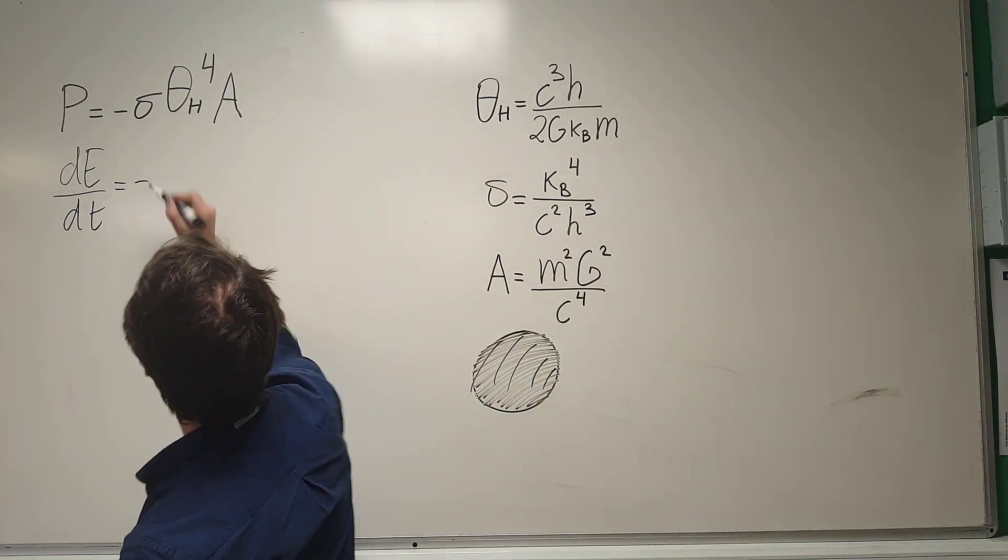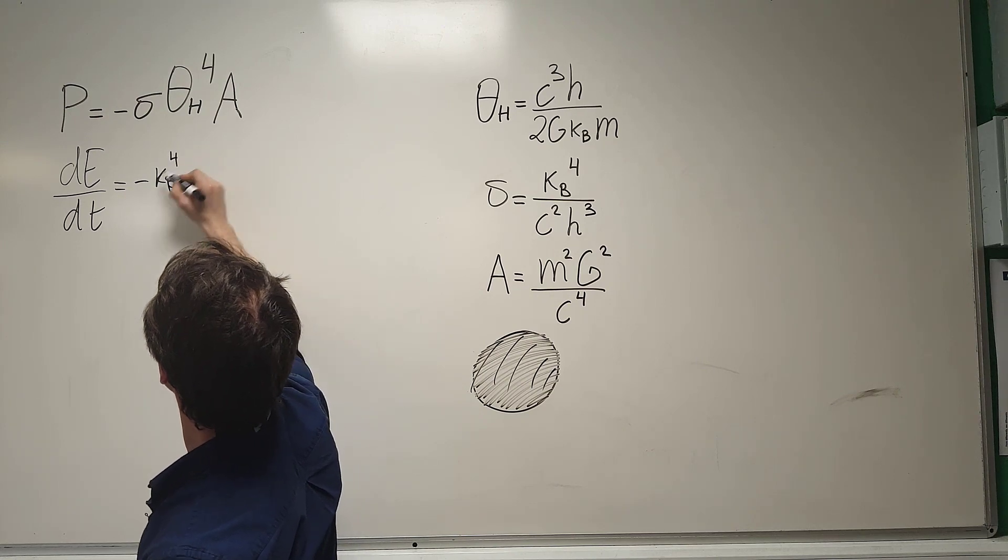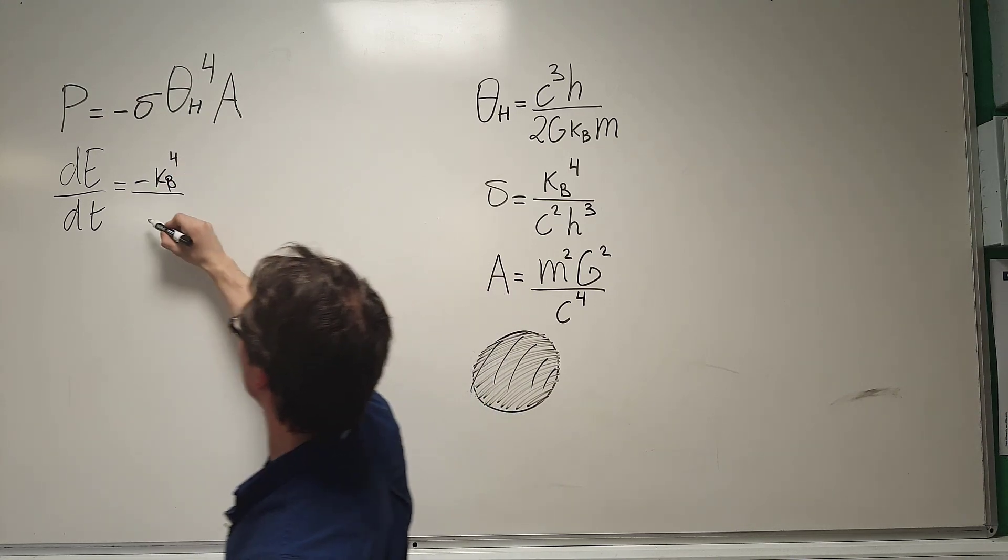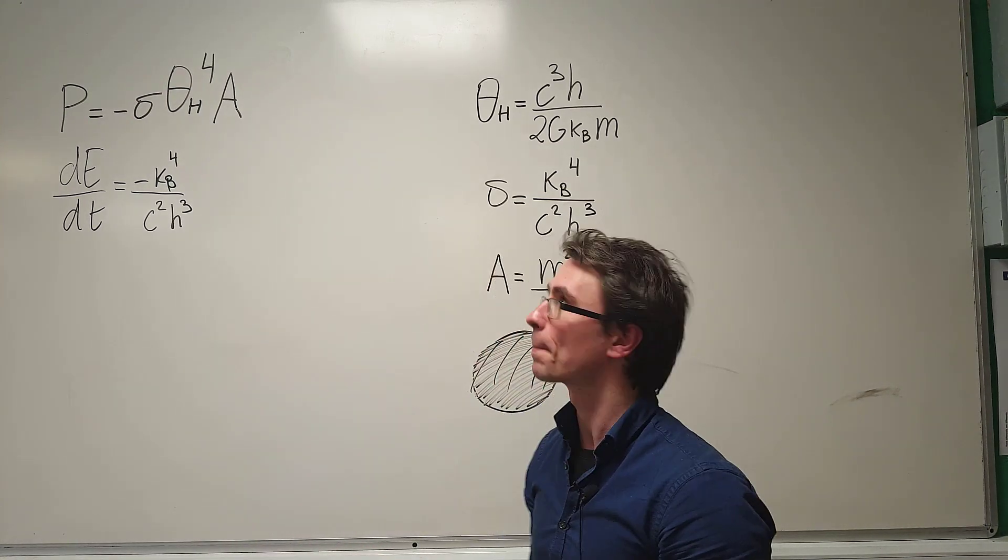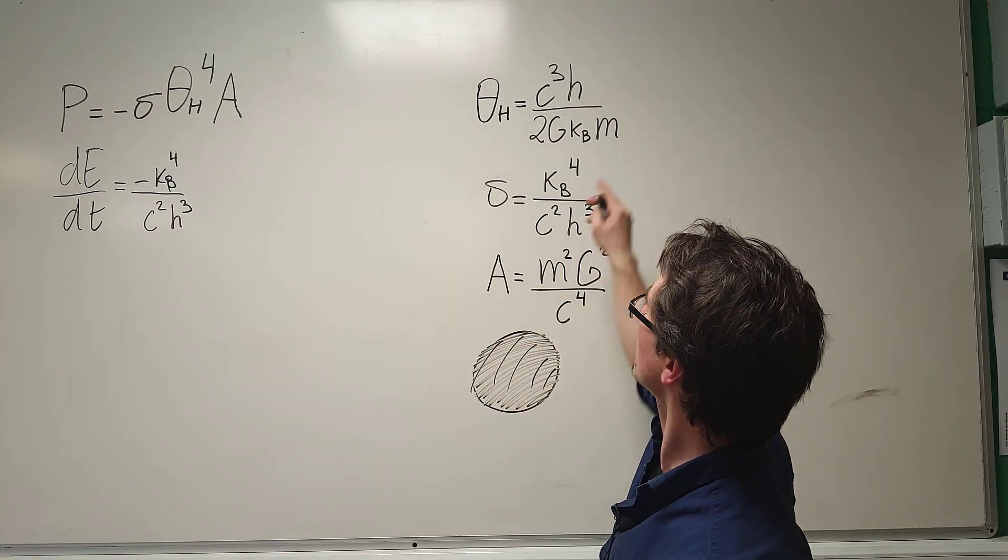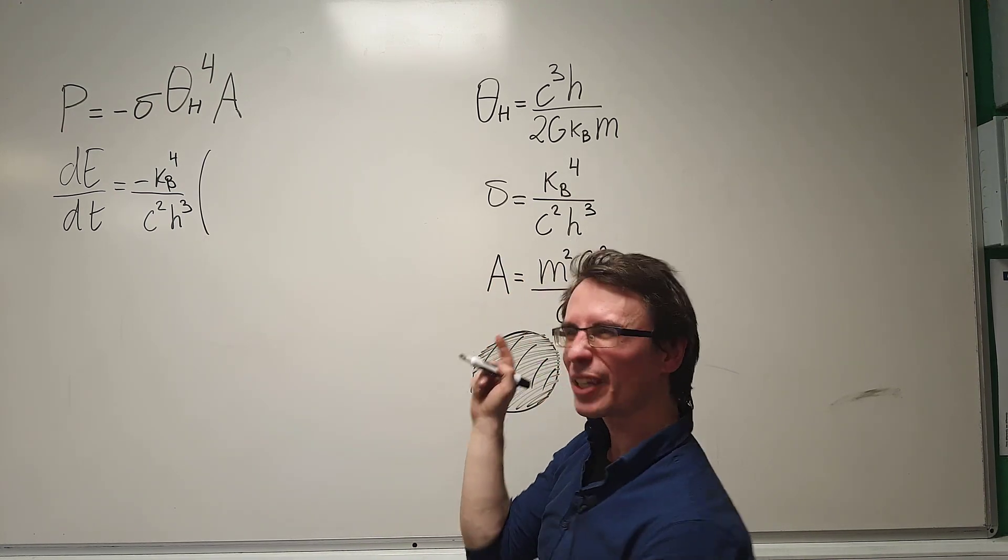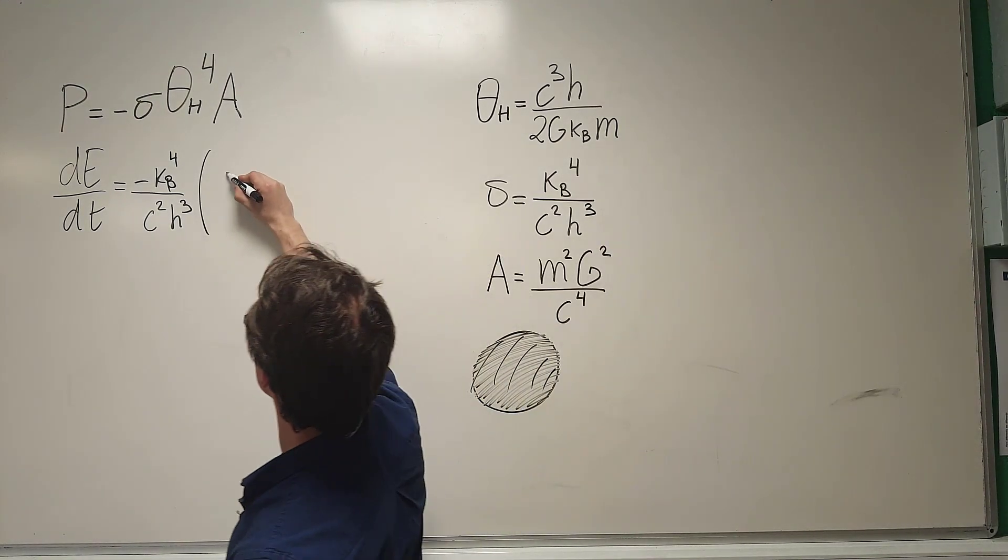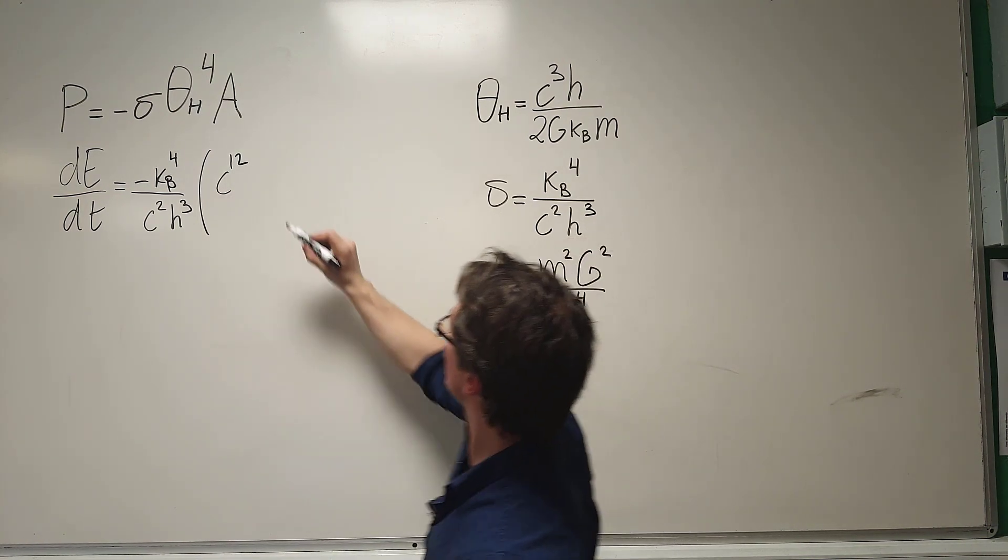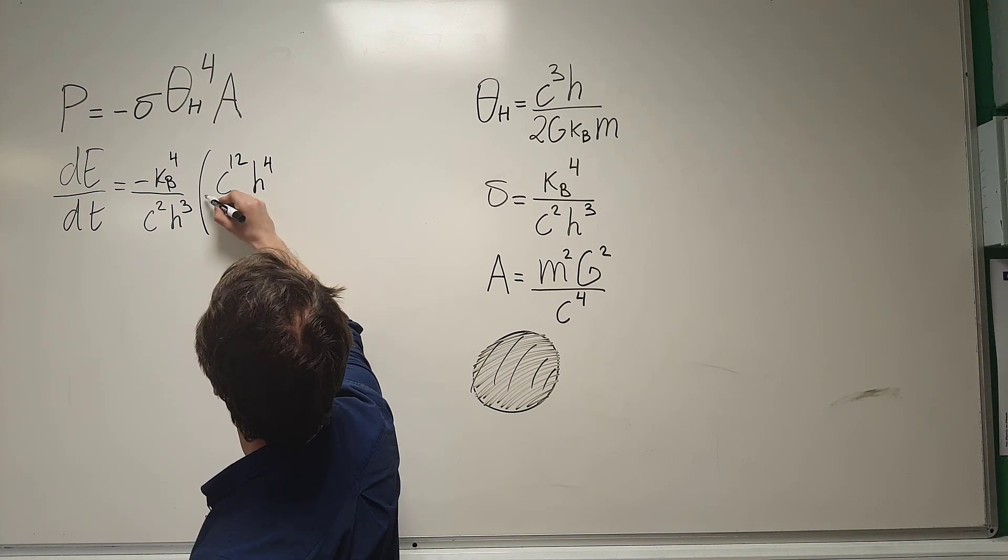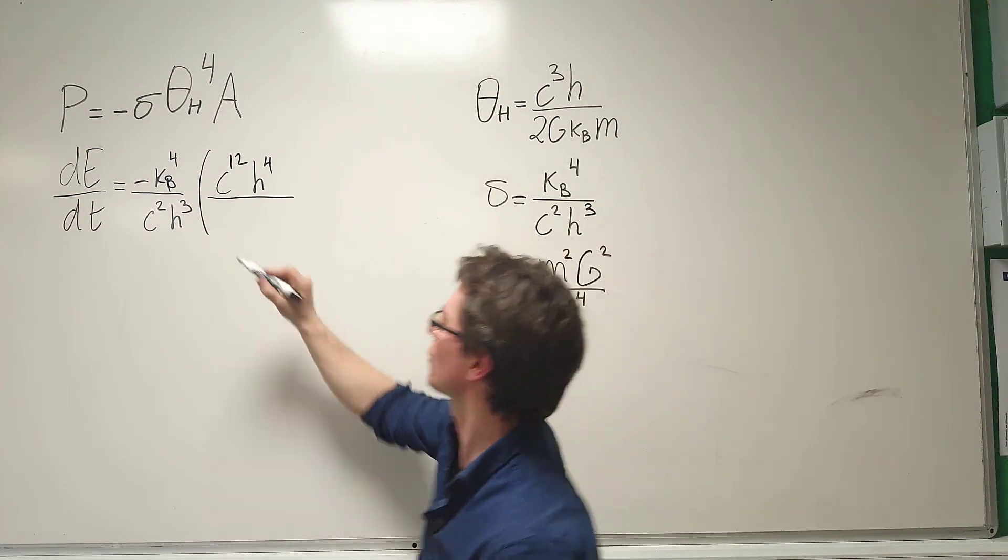We're going to have minus sigma. Minus sigma is going to give us minus Kb, Boltzmann's constant, raised to the power of 4. Then we're going to be dividing that by C squared, H to the power of 3. Now, let's take this expression and raise that to the power of 4. So, we're going to get C cubed raised to the power of 4, giving us C, the speed of light, raised to the power of 12. H to the power of 4. Then we're going to be dividing that by 2 to the power of 4, which is 16.